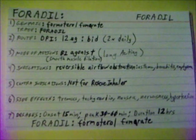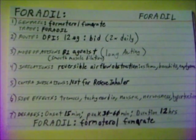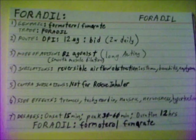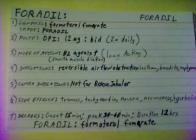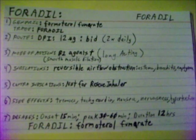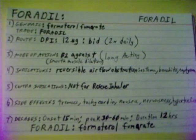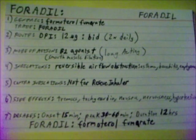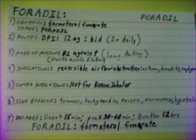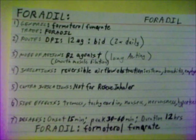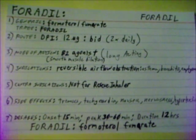Foradil. Generic name: Formoterol Fumarate. Trade name: Foradil. Foradil is given by dry powder inhaler, 12 mcg BID — twice daily. Mode of action: it is a B2 agonist which causes smooth muscle dilation in the breathing muscles.